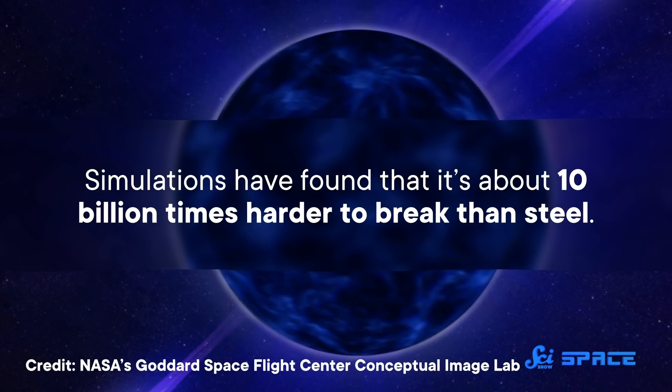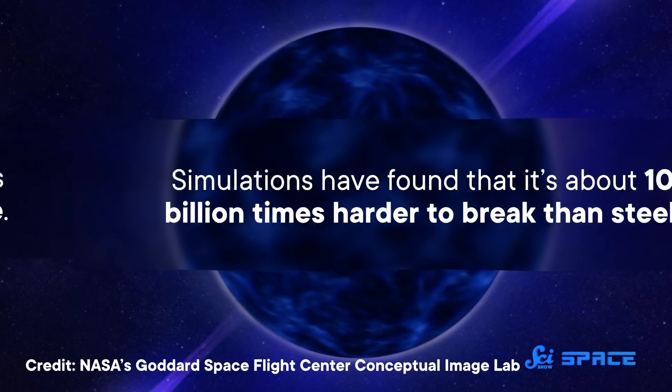Unlike white dwarfs, the crust of a neutron star is made mostly of iron nuclei, rather than carbon and oxygen. So it's no diamond, but it is still ridiculously solid. Like, simulations have found that it's about 10 billion times harder to break than steel.